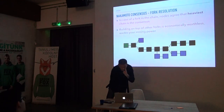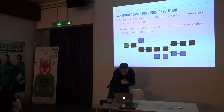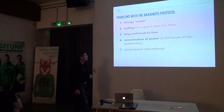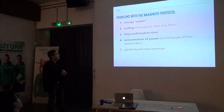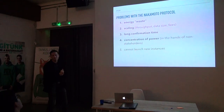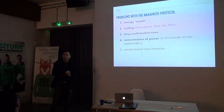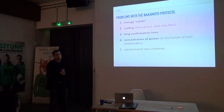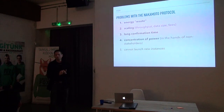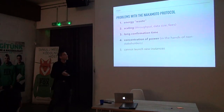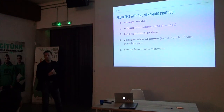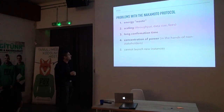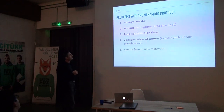But this is not perfect, as you all know, because it wastes a lot of energy. The Bitcoin network can do about seven transactions per second, and it burns the electricity of Sweden — or Denmark — I'm not sure. So it looks like quite a waste for seven transactions per second. It's also a scaling problem.